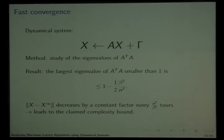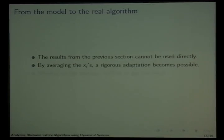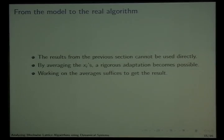This was the analysis of the model. But our result is about the real algorithm, not just the model. This analysis cannot be transposed directly to the real algorithm; we need some transformation and averaging. In the end, a rigorous adaptation of what was done on the model — which was a sort of worst case analysis — can be transposed to the real algorithm, yielding the result on the quality of the BKZ output.